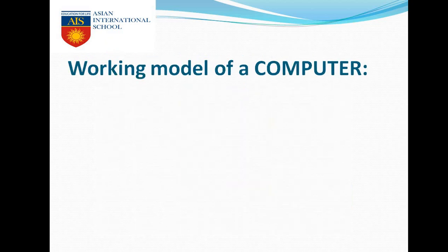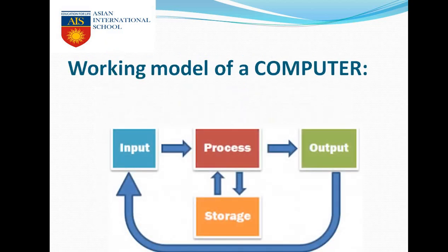Next is the working model of computers. The main four components of the computer are: input device, processing unit, output device, and storage unit. Our computer takes input from the user, then sends it to the processor — the CPU. The processor performs the instructions based on whatever the user has given, then makes the output and sends it to the output device like the screen. By that time, the processor also stores the data to the storage device.